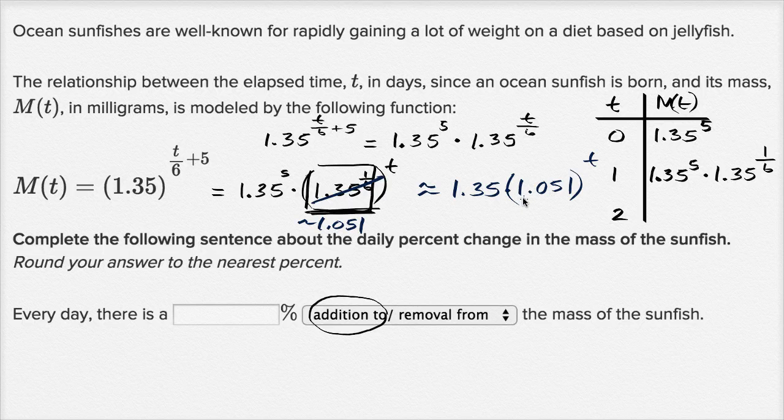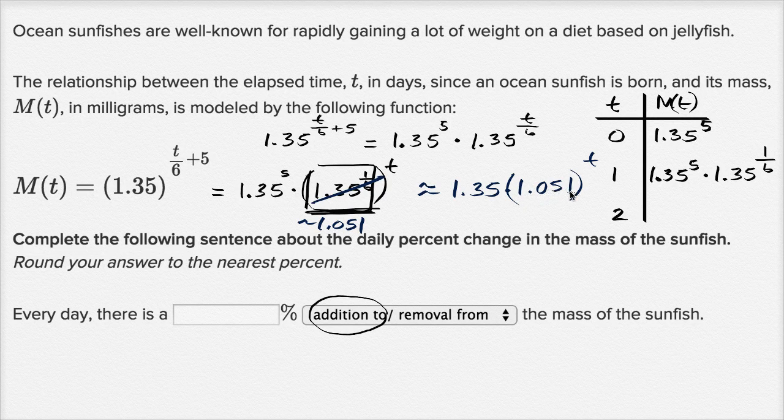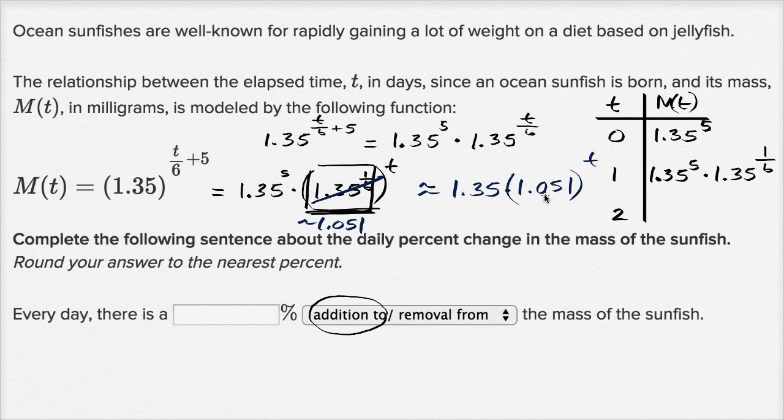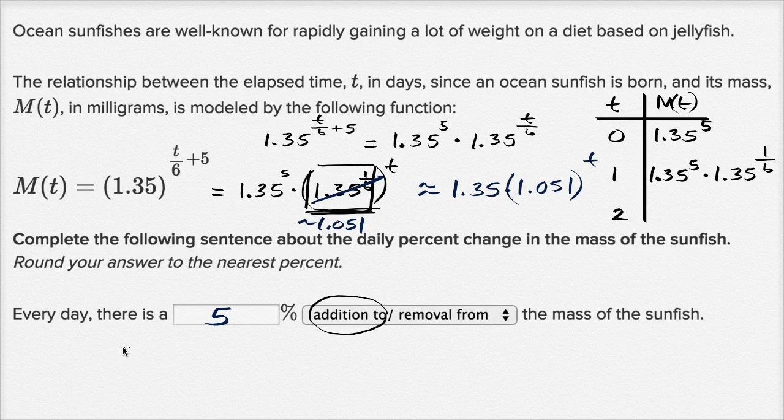So every day we are growing by a factor of 1.051. Growing by a factor of 1.051 means that you're adding a little bit more than five percent. You're adding 0.051 every day of your mass. So you're adding 5.1 percent. And if you're rounding to the nearest percent, we would say there is a five percent addition to the mass of the sunfish every day.